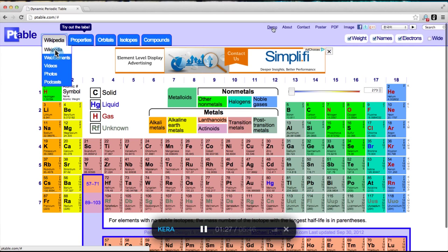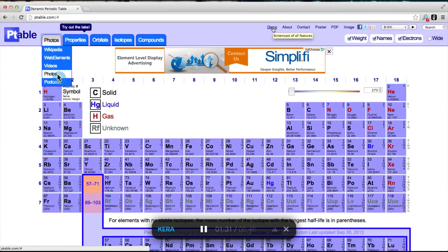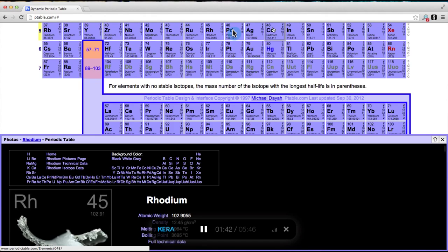In addition to Wikipedia, the write-up tab offers descriptions from Web Elements, Theodore Gray's Photocentric site, the University of Nottingham's Periodic Table of Videos, and the Royal Society of Chemistry's podcasts. ptable will hide its series colors and mimic the color schemes of the various sites to indicate where clicks will go.